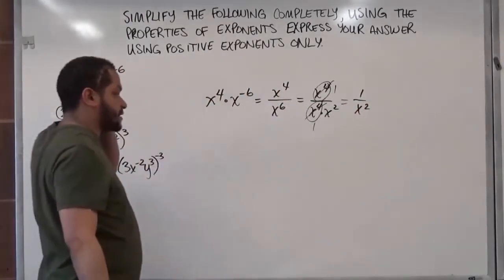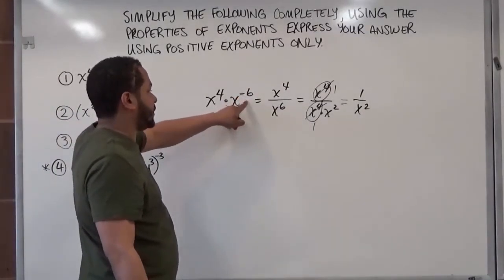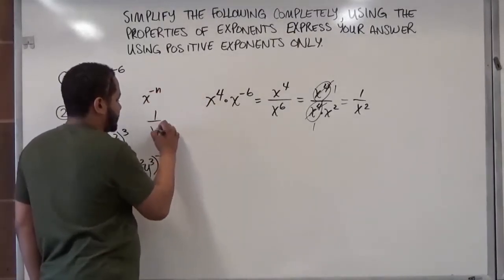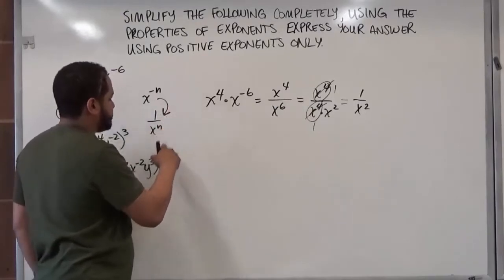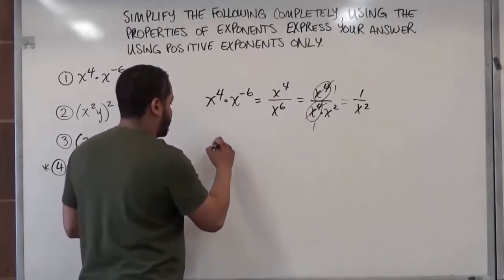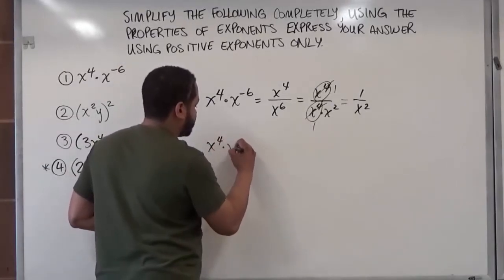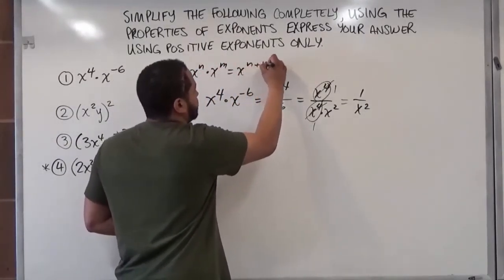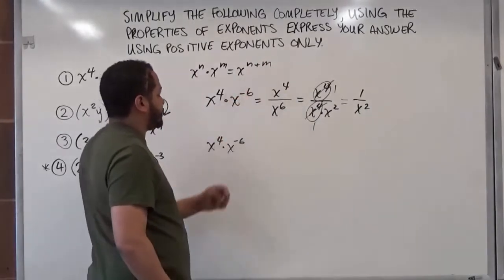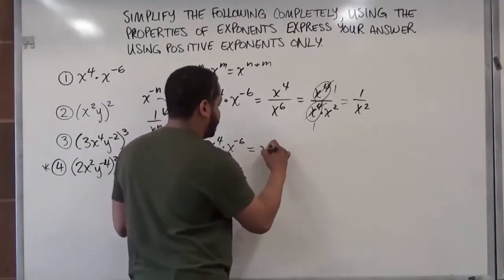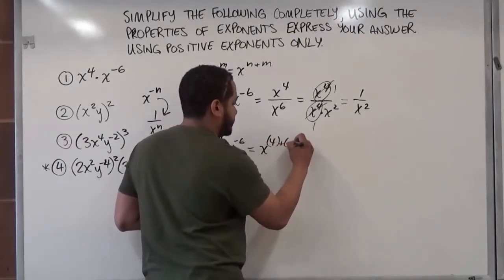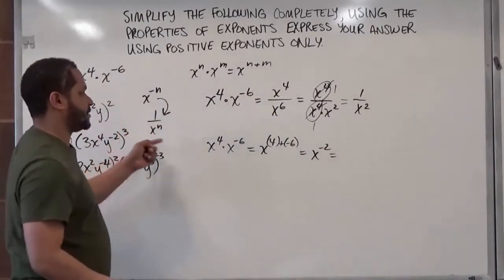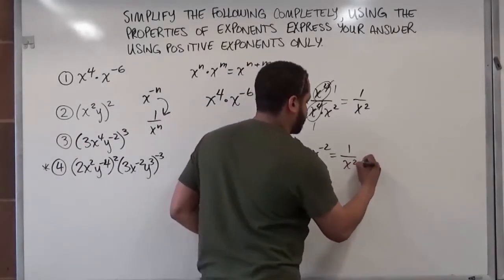I didn't use any other properties of exponents except for the negative rule: whenever you have a negative exponent you want to move it to the denominator. So x to the negative n becomes one over x to the n when it transposes to the denominator. Now let's use the addition rule: x to the n times x to the m gives us x to the n plus m. We just add up the exponents — x to the fourth plus negative six gives us x to the negative second, which we then move to the denominator to get one over x squared.